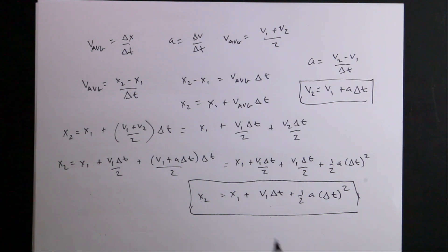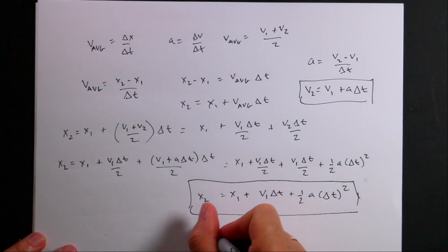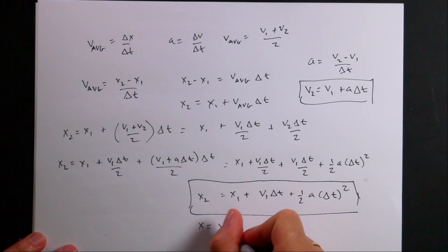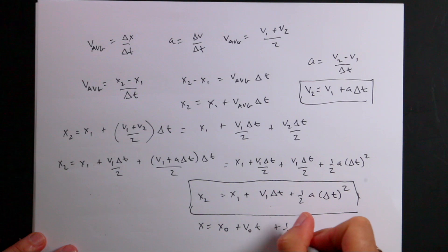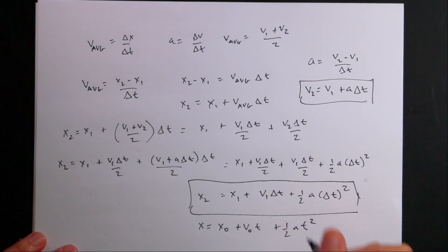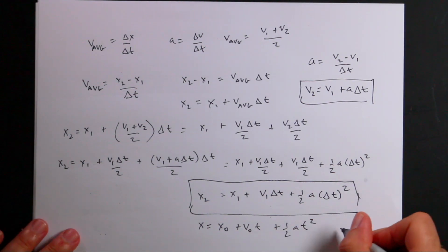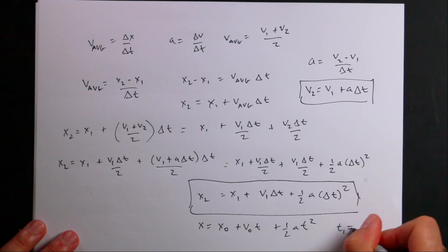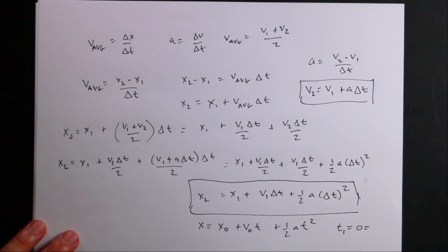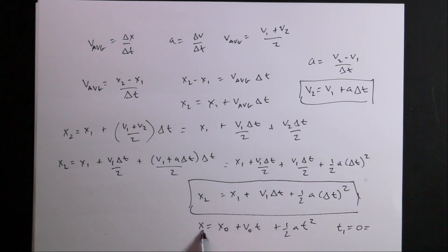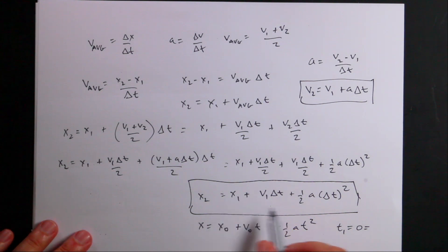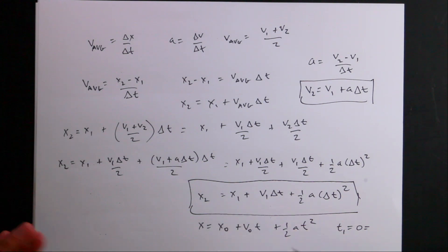You may see this written as X equals X0 plus V0 T plus one-half A T squared. This is the same thing — it assumes T1 equals zero as the starting time, X0 as the initial position, V0 as the initial velocity, and X as the final position.